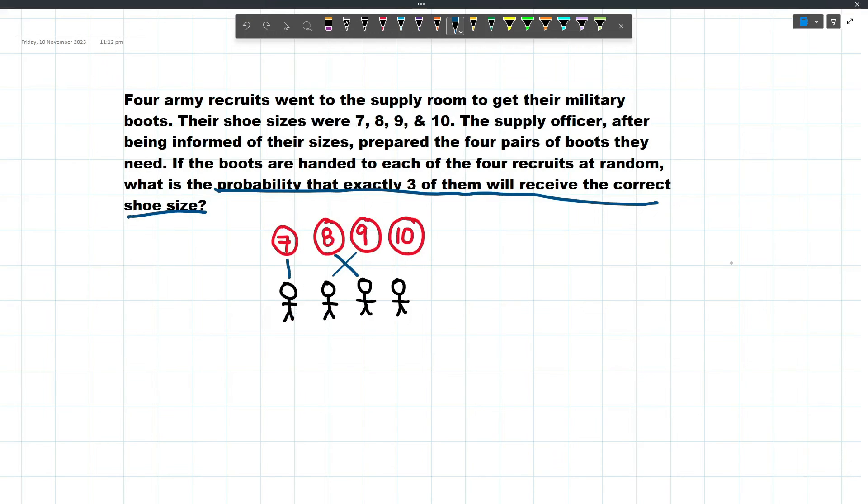Now, if exactly 3 received their appropriate shoe size, then the last member will also receive the correct shoe size. So there's no way that there will be exactly 3 who will receive the correct shoe size.